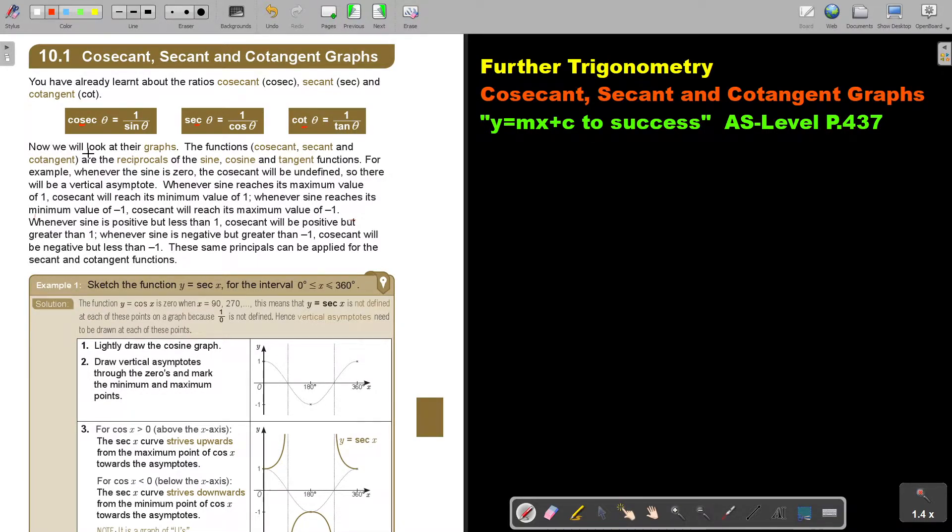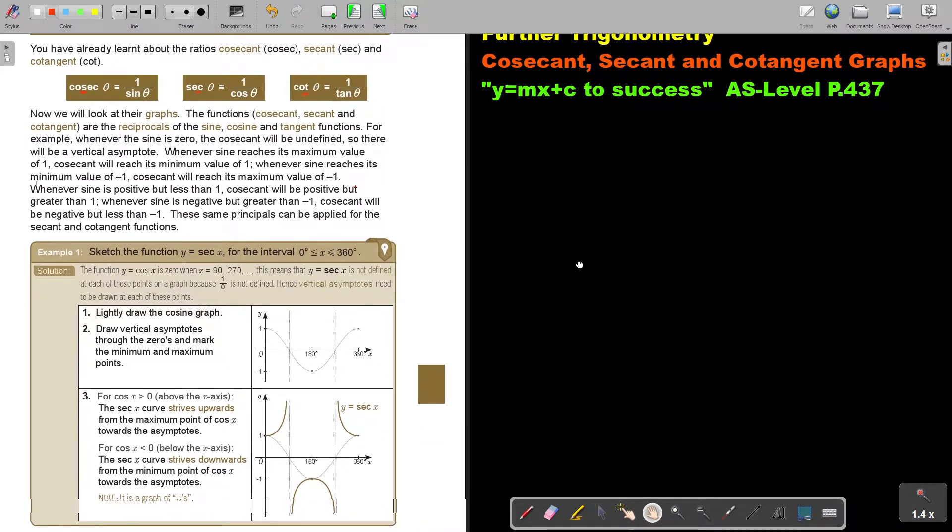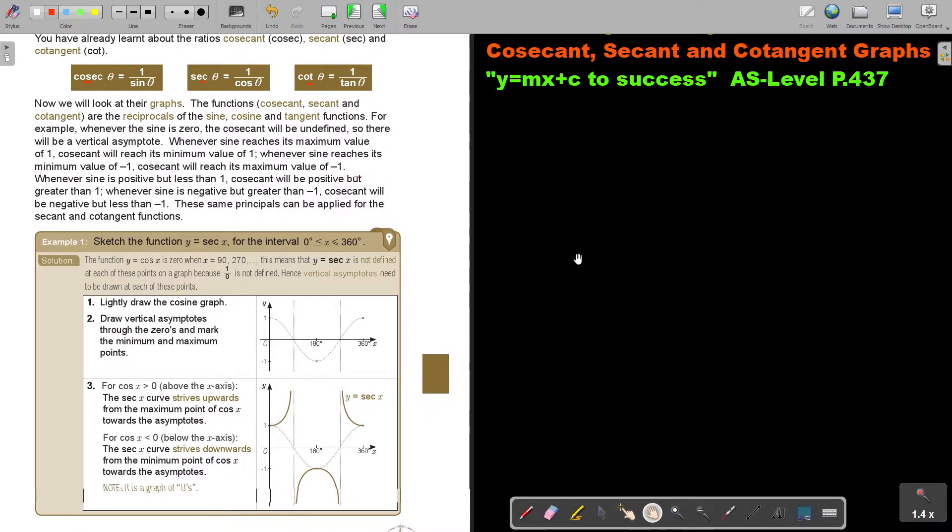Now we will look at their graphs. The functions cosecant, secant, and cotangent are the reciprocals of the sine, cosine, and tangent functions. For example, whenever the sine is 0, I'm just going to use this graph so that the theory makes sense. So let's start. Whenever the sine is 0, the cosecant will be undefined, so there will be a vertical asymptote.